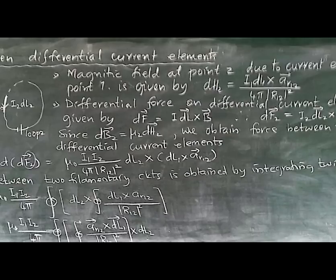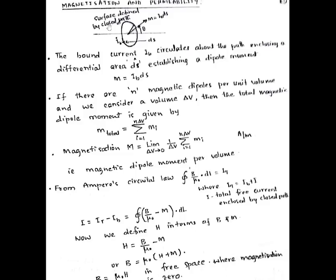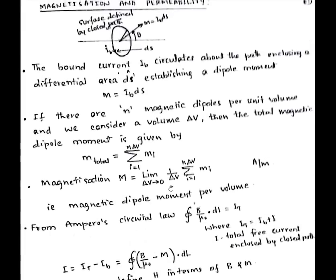This is all about force between differential current elements. Now let's get to the concept which we skipped in Module 3. These are very important concepts — magnetization and permeability. The formulas obtained through magnetization and permeability are very important because they are used directly in problems.